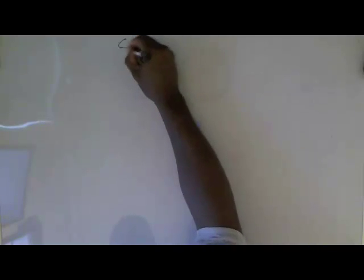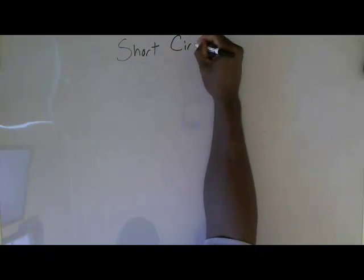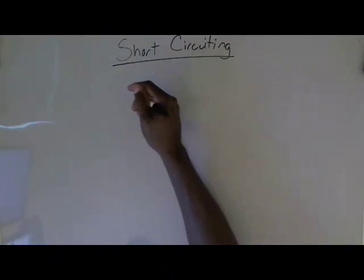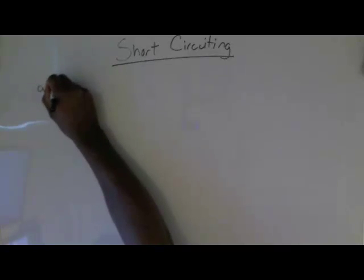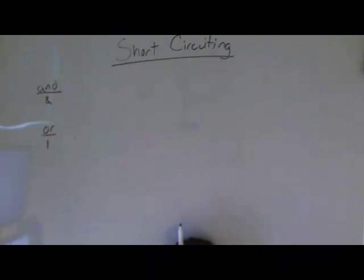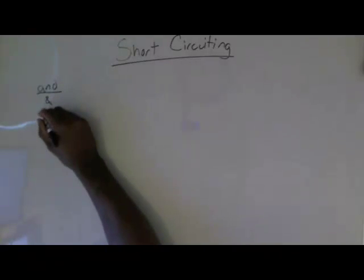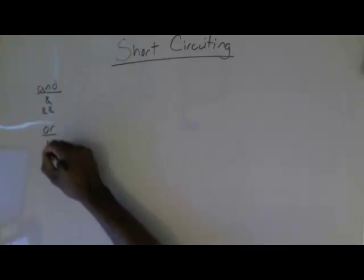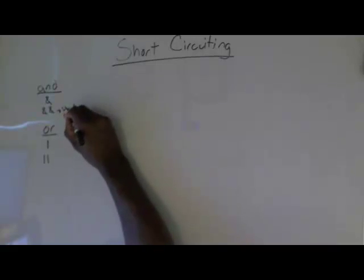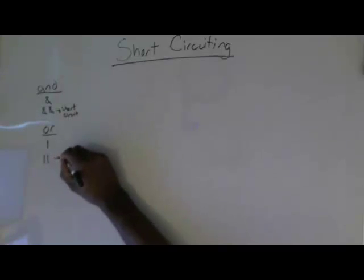I want to talk about the concept known as short-circuiting. This is a concept that comes up when you're talking about logical operators, and specifically when you're talking about AND and OR. We indicate AND with the single ampersand and OR with the vertical line. There are short-circuit versions of these operations, which we indicate with a double AND or a double OR.